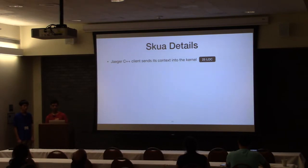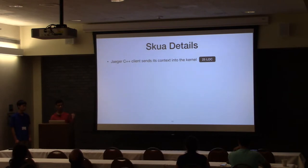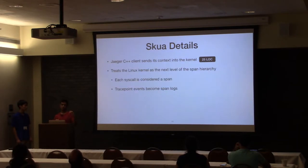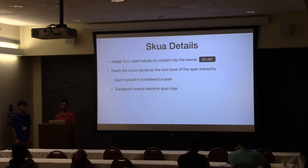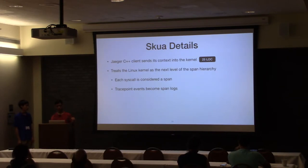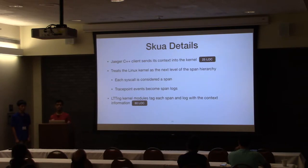The Jaeger C++ client that sends its context into the kernel took around 25 lines of modification to the existing Jaeger client library in C++. We treat each Linux kernel event as the next level in the span hierarchy. So if there was a single span running for the visual rank service, each syscall that the visual rank service makes appears as another span beneath it. All of the kernel events generated — like RCU events, scheduler switches, allocations and frees of kernel memory — each become an event in the logs of that kernel span. Our modifications to the LTTNG kernel modules to tag each span with the associated context information took around 80 lines of code, and our LTTNG adapter took around 250 lines of code.